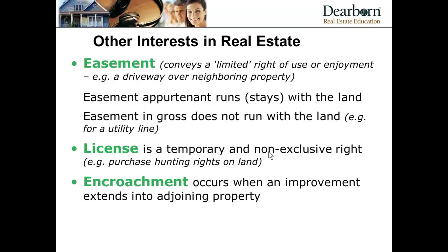In addition to easements, which are permanent, there are licenses, which are typically temporary and not exclusive. A common example is purchasing hunting rights on land — you pay the landowner a fee and are given the right to hunt for a certain period, but it's not exclusive, meaning they can sell that license to other people as well. This differs from an easement, where there would be a single owner or piece of land benefited.